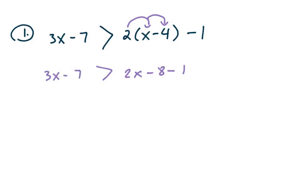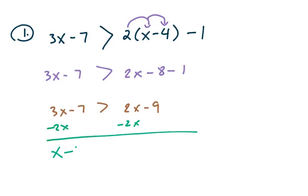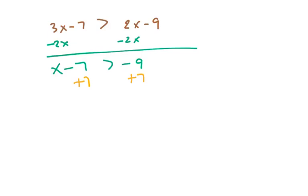Then we want to combine like terms. On the left side there's nothing to combine, but on the right side we have negative 8 and minus 1, so I can put those together. Now we have to move things to the other sides. I'm going to subtract 2x to put my x's together, and then add 7 to both sides. So x is greater than negative 2.